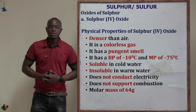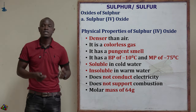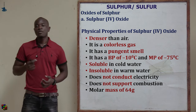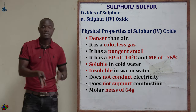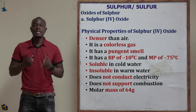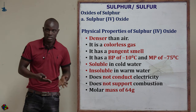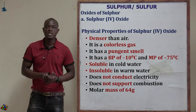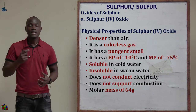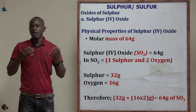Let's look at the physical properties of sulfur(IV) oxide. First, it is denser than air, which is why it is collected using the downward delivery method. It is a colorless gas with a pungent smell. It has a boiling point of negative 10°C and a melting point of negative 75°C.